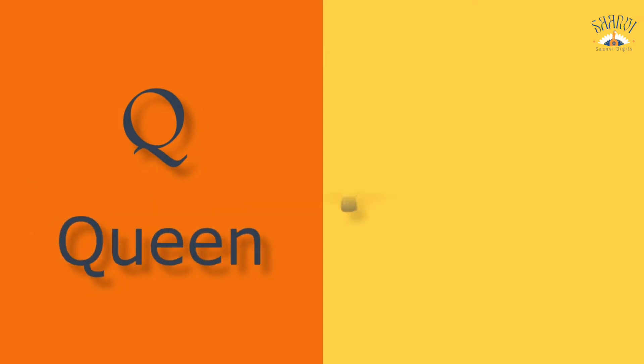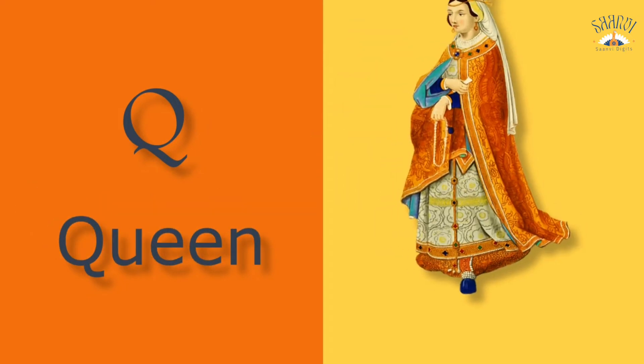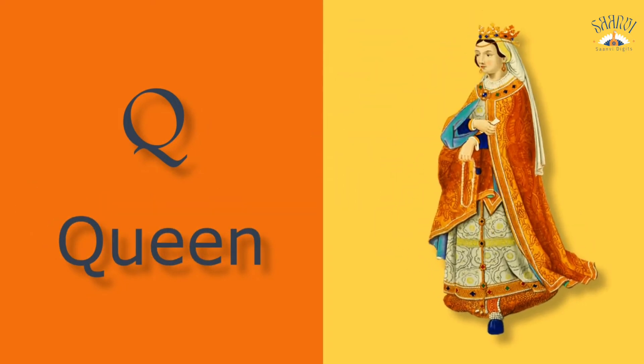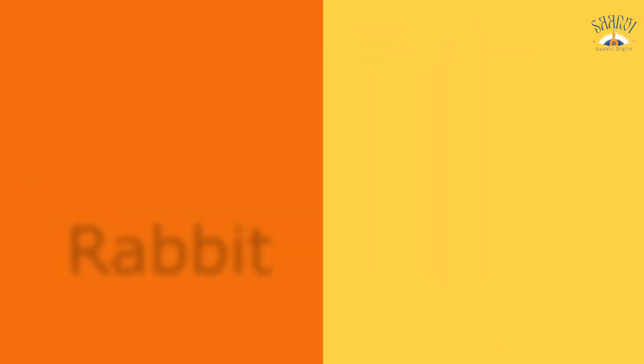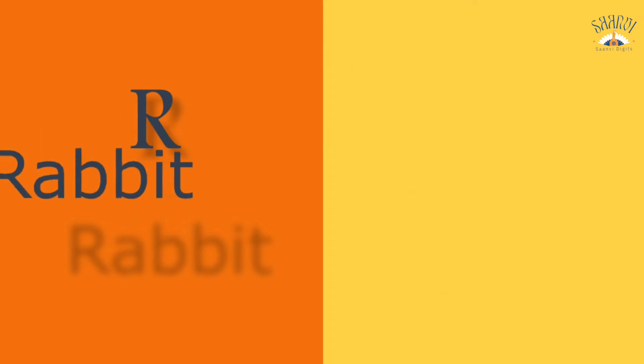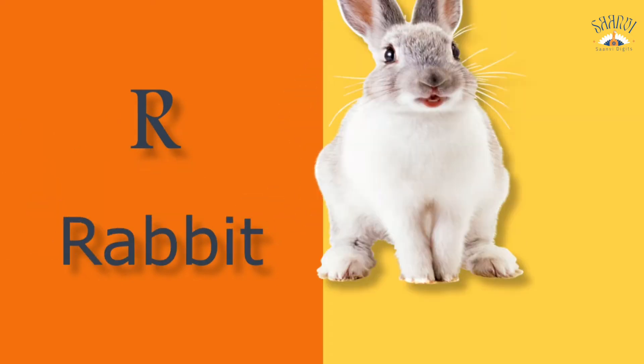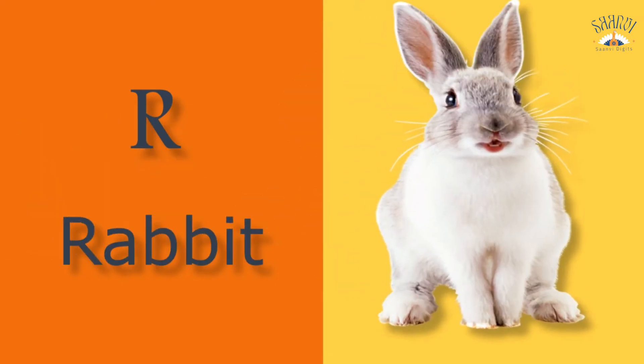Q for queen. Queen means rani. R for rabbit. Rabbit means kargos.